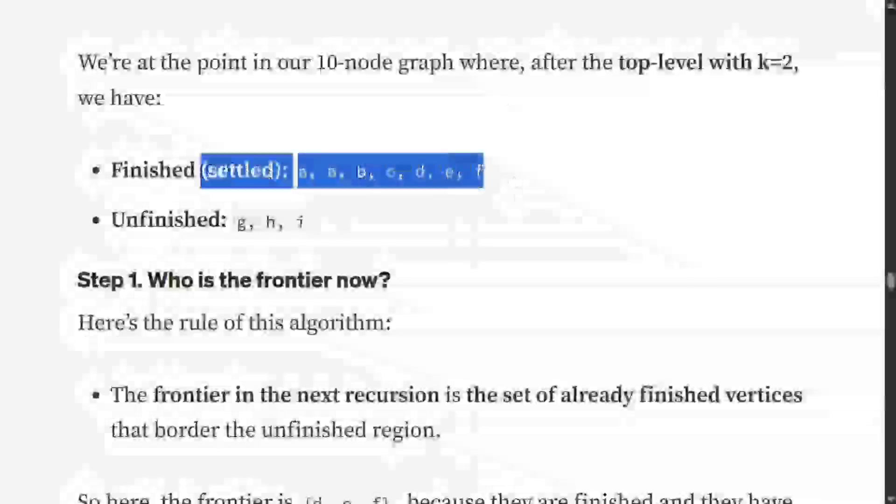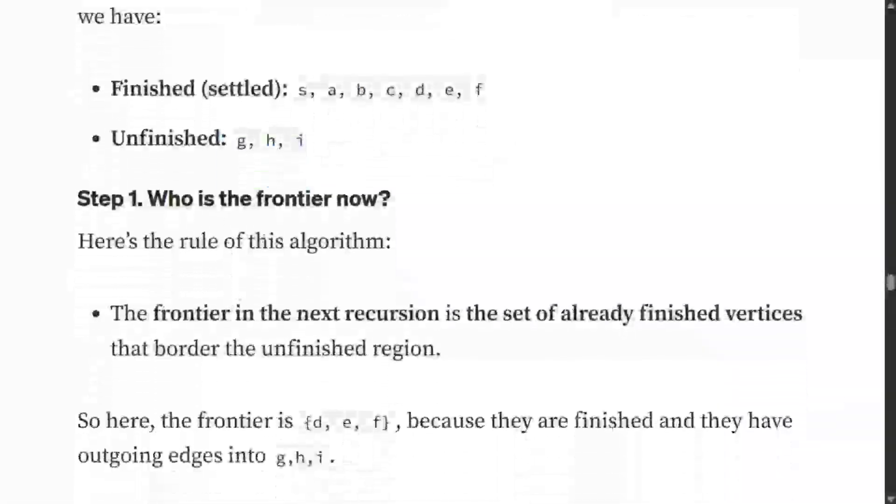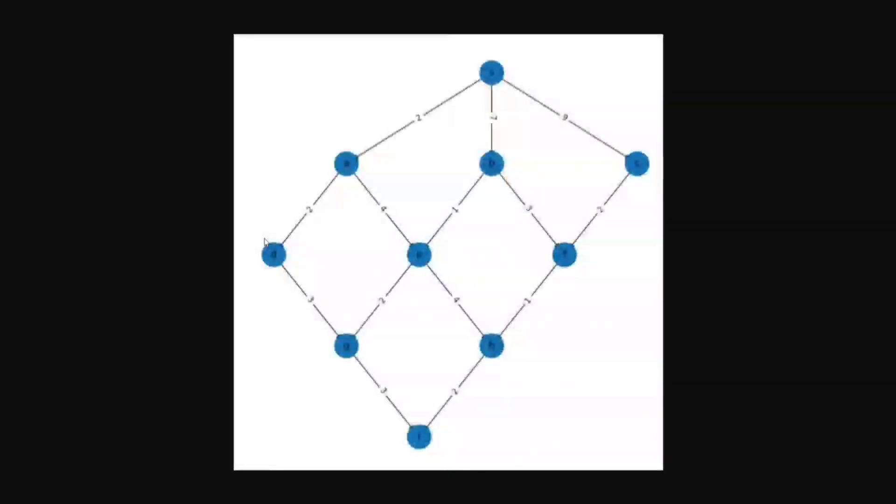We have finished nodes and unfinished nodes. Now who is the frontier? Frontier is a root node from which we're starting the calculation. In the first iteration it was S. Now in the next iteration it would be those nodes which can reach out to the unfinished nodes. If you look at G, H, and I, they are reachable by D, E, and F. Hence all these three nodes become our frontier nodes from which we're starting the calculation again.